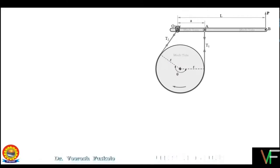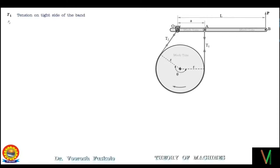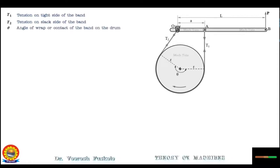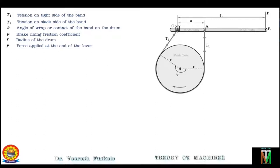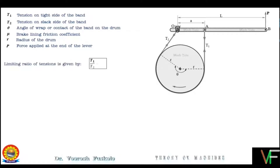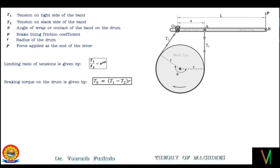Now let us find out the force P — that is, let us derive the equation of P to be applied at the end of the lever for clockwise and counterclockwise rotation of the drum. T1 is the tension on the tight side, T2 is the tension on the slack side, theta is the angle of wrap or contact of the band on the drum, mu is the brake lining friction coefficient, R is the radius of the drum, and P is the force applied at the end of the lever. The limiting ratio of tensions is given by T1/T2 = e^(mu·theta), and the braking torque on the drum is Tb = (T1 − T2) × R.